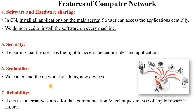Next is scalability. Every network has a particular restricted area, but we can add different new devices to the network. For example, if there are 15 computers in a lab and 10 are connected in one network, you can add the remaining 5 computers. This is called scalable. Next is reliability. Suppose in a particular network some software or hardware fails. At that time, an alternative source of communication technique is available — this is called reliability. So these are the features of computer network.